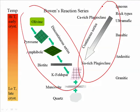In the discontinuous series, at a very high temperature, the first mineral to form is olivine. But as the magma continues to cool, some of that olivine will turn into pyroxene. The pyroxene that you're familiar with is augite.